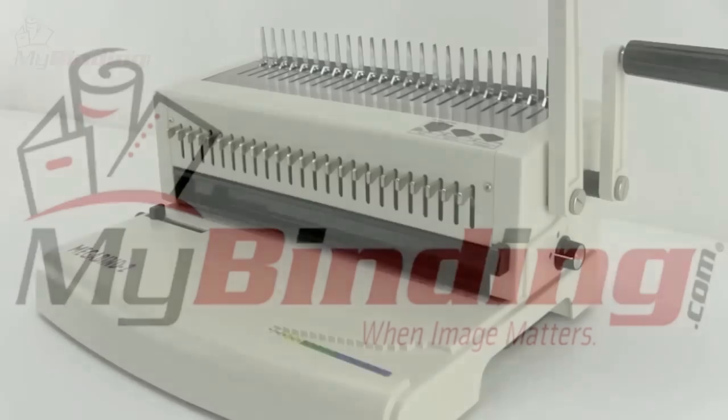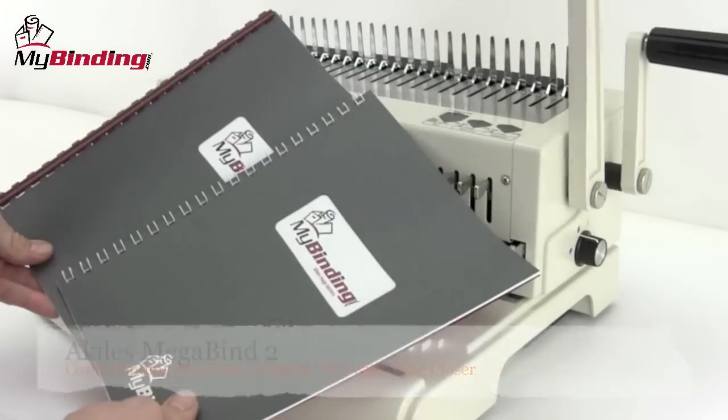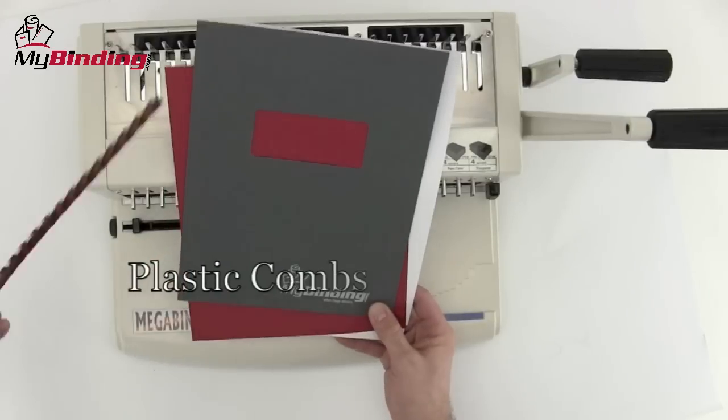Welcome to MyBinding video. This is a look at the Megabind 2 by Achilles, a 2-in-1 binding system that punches and binds for both plastic comb and spiral O coil.